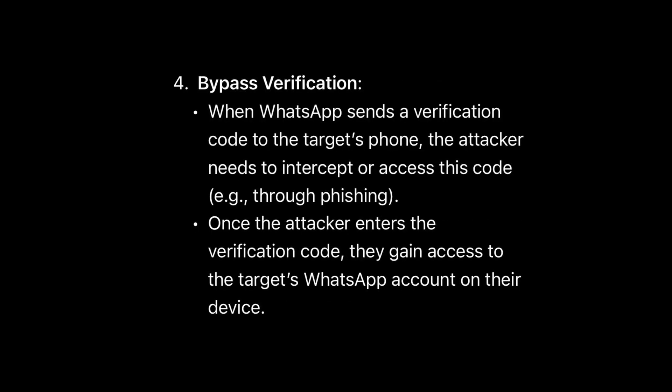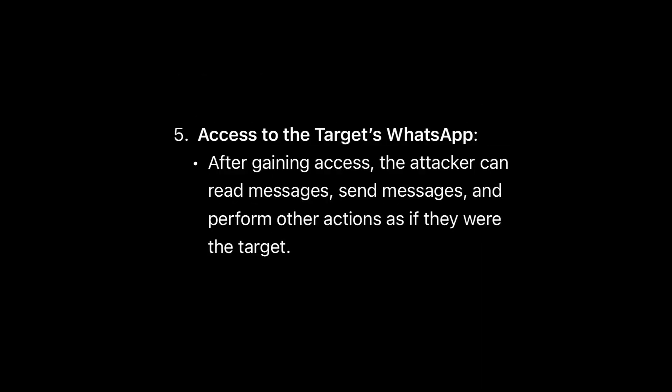The fourth step is bypassing verification. When WhatsApp sends a verification code to the target's phone, the attacker needs to intercept or access this code. Attackers use phishing to obtain the verification code. Once entered, the hacker gains access to the target's WhatsApp account on their own device and can read messages, send messages, and perform other actions as if they are the target.